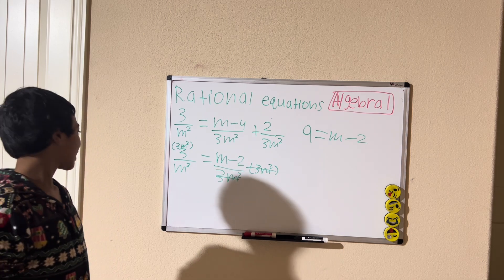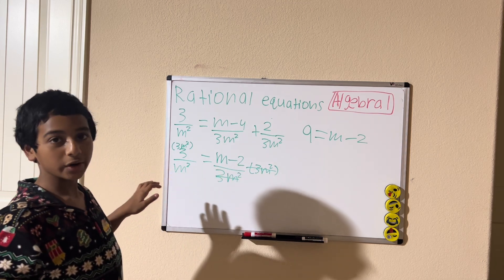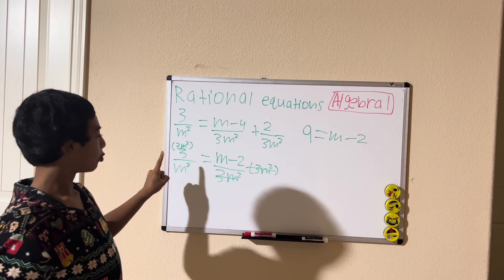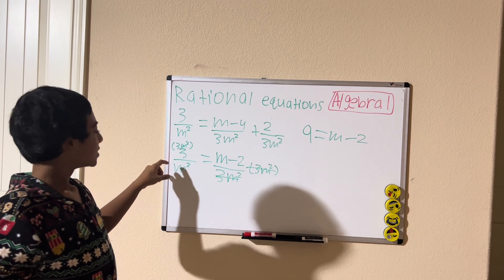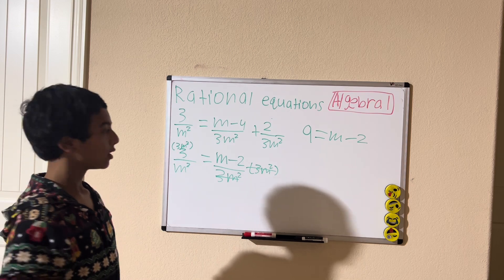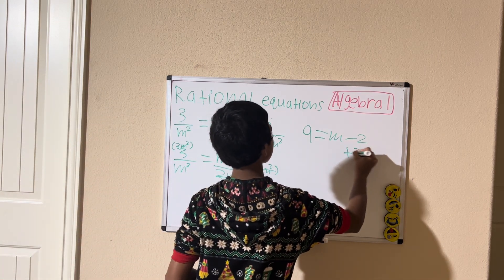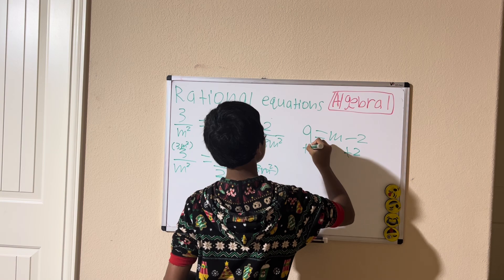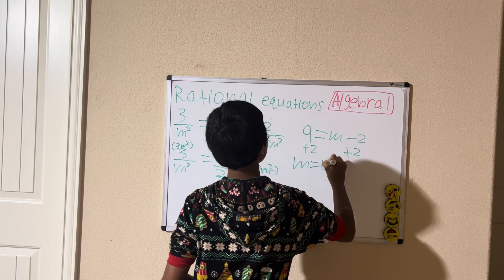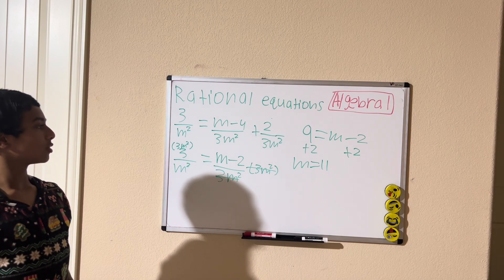Let me explain that again: since we multiply both sides by 3m squared, 3m squared divided by m squared is 3, and then 3 times 3 is 9. Now let's solve the equation by adding 2 to both sides, and m is equal to 11. That's how you solve a rational equation.